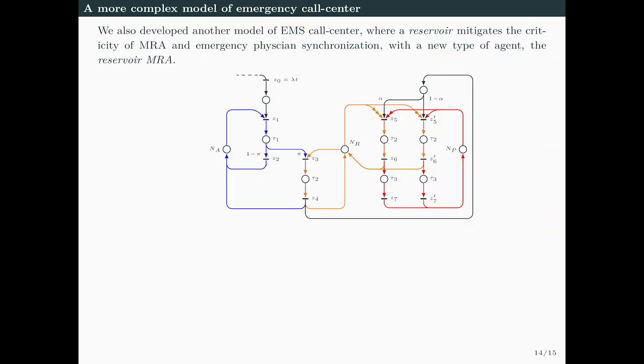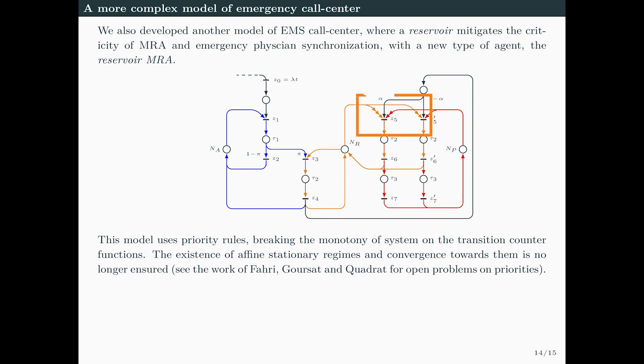To finish the talk, I'll say a few words on the priority mechanism framework. We also developed another more complex model of emergency health call center. A central weakness of the previous model is that when there are not enough emergency physicians, the MRAs are slowed down as well and calls cannot be picked up due to the synchronization step. Here we introduce a monitor reservoir to mitigate this effect, requiring a new type of agent, the reservoir MRA, who receives calls from the usual MRA and stocks them for the doctor, thus releasing the MRA to pick up new calls. The key point is that it makes use of priority rules, which breaks the monotony of the system and transition counter functions.